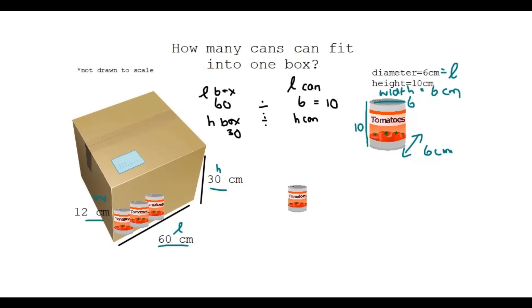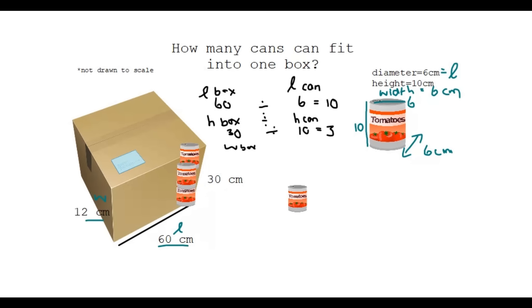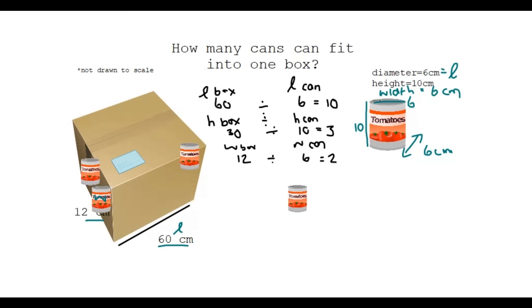For the height: the box height is thirty centimetres and the can height is ten centimetres. Thirty divided by ten gives three, so three cans fit along the height. For the width: the box width is twelve centimetres and the can width is six centimetres. Twelve divided by six gives two — two cans fit along the width. This makes sense because two cans of diameter six placed side by side equal twelve centimetres.